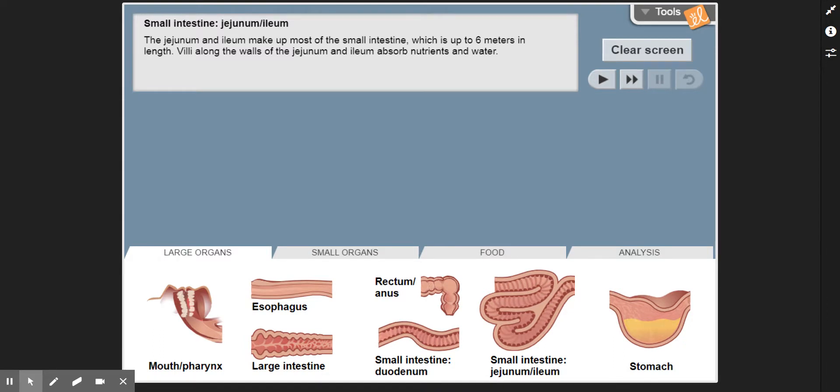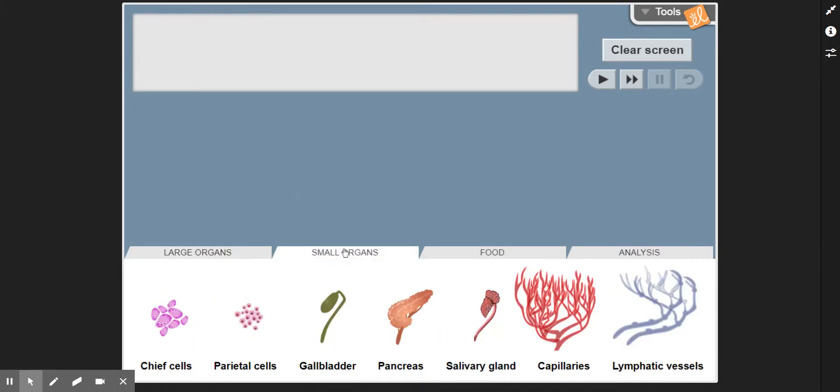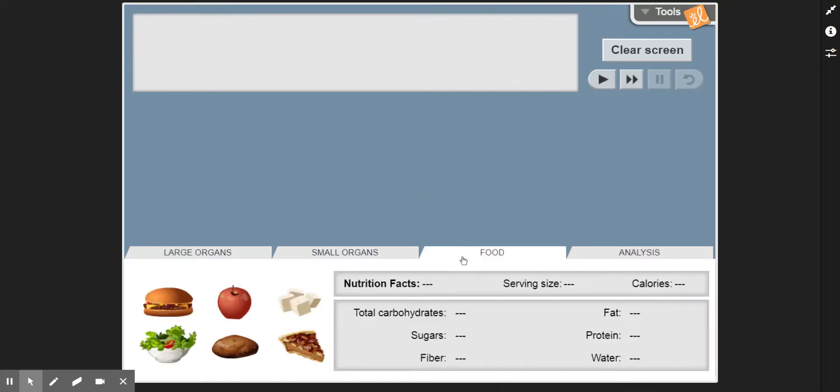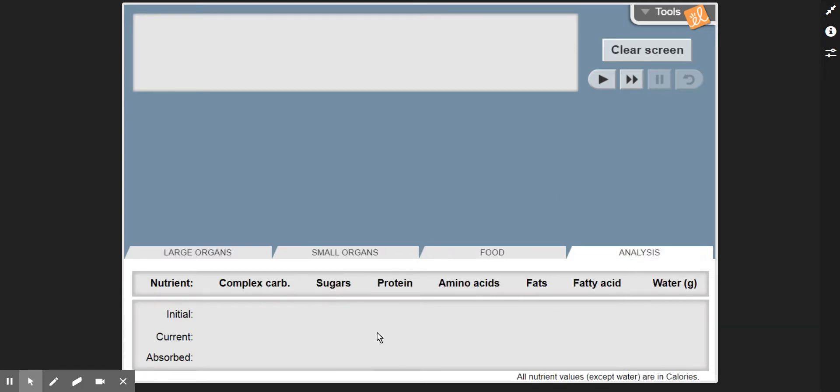We also have the small organs here: chief cells, parietal cells, gallbladder, pancreas, salivary glands, capillaries, lymphatic systems. There are questions where you'll have to see what they do, and as you go over each one you can see a brief description. Here we have our food tab where you can look at the different types of food and how the body goes through and uses them. And finally the analysis—this is where it shows you how many carbohydrates, sugars, proteins, amino acids, fats, fatty acids, and water is available, how much currently as the food is going through or when it's finally expelled at the end, and how much is absorbed.